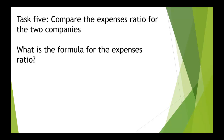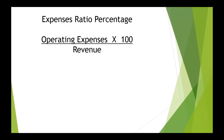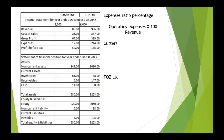Task 5 is to compare the expenses ratio for the two companies. The formula for the expenses ratio is the operating expenses multiplied by 100 divided by the revenue. This, of course, is going to be a percentage. So for Cutters, the operating expenses were 12, revenue of 89, giving an expenses ratio percentage of 13.5%.